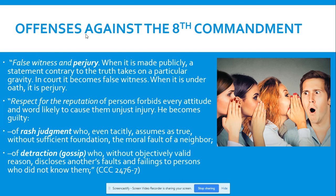Detraction — or gossip — without objectively valid reason discloses another person's faults and failings to persons who did not know them. For example, if I were talking to my wife about one of my students and throwing out nasty words about that student when I probably don't even know them well enough to say that — that's gossip. If you are going to tell somebody else's failings to someone, you have to have a legitimate reason to do so.